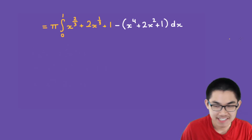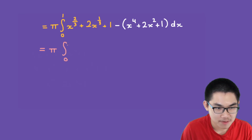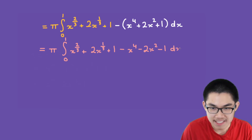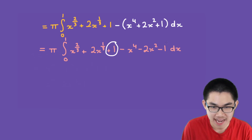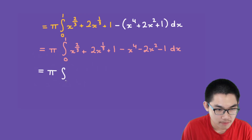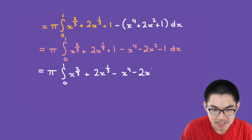Putting it all together, this is pi times the integral from 0 to 1 of x^(2/3) + 2x^(1/3) + 1 minus x⁴ minus 2x² minus 1 dx. The ones cancel because 1 minus 1 is 0, so this becomes pi times the integral from 0 to 1 of x^(2/3) + 2x^(1/3) minus x⁴ minus 2x² dx.